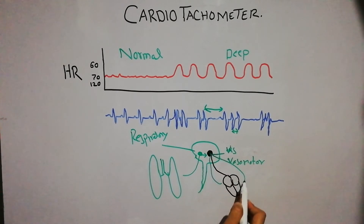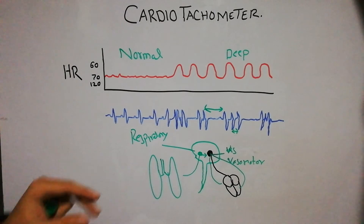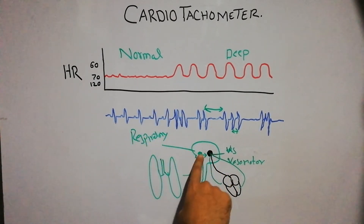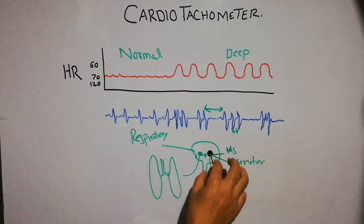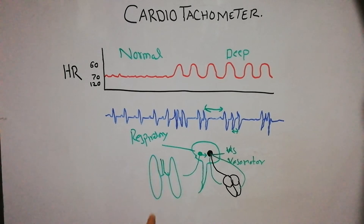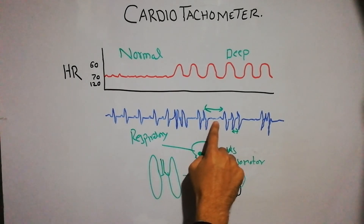The heart is supplied by both sympathetic and parasympathetic nerves. Sympathetic nerves basically increase the heart rate and the strength of contraction, while parasympathetic nerves decrease the heart rate and the strength of contraction. During deep breathing, when impulses spill over from the respiratory center to the vasomotor center, it increases the activity of sympathetic and parasympathetic nerves in cycles — in one portion of the cycle it increases the sympathetic so the heart rate increases, while in the other portion it increases parasympathetic so the heart rate decreases.